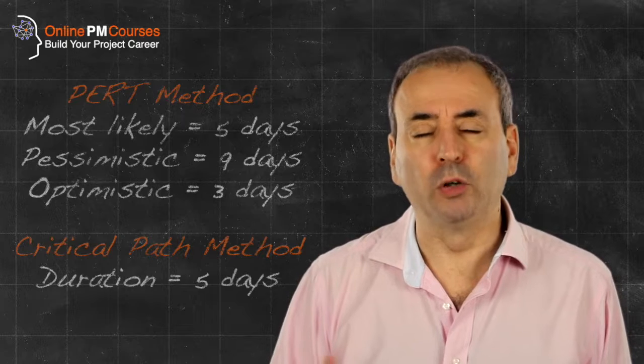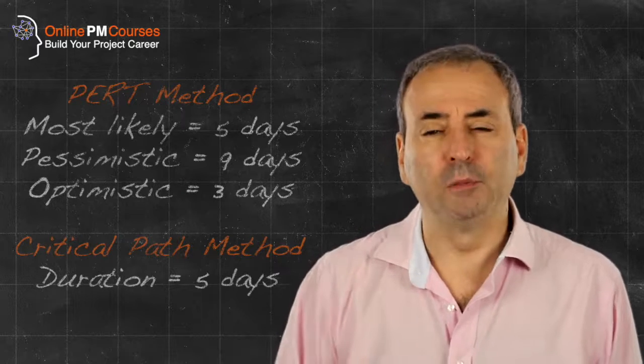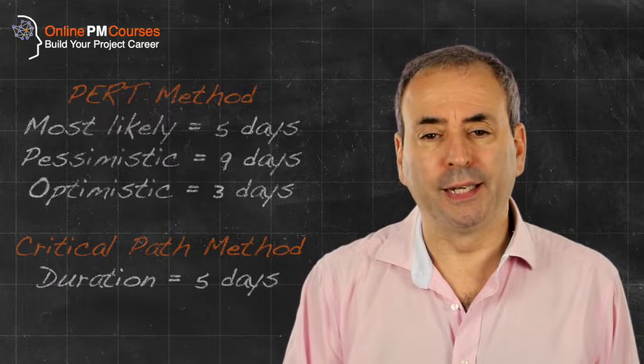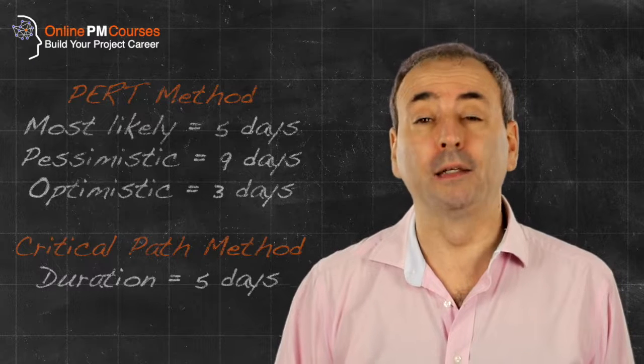Typically these estimates are not symmetric in the sense that the optimistic estimate is not the same distance from the most likely estimate as the pessimistic estimate. So this gives us a kind of triangular distribution.